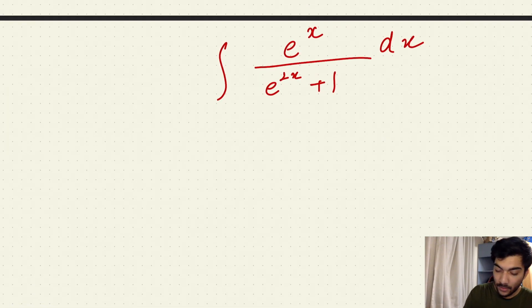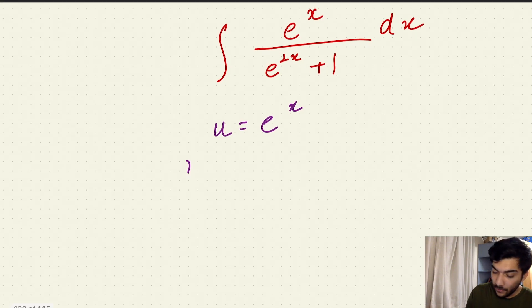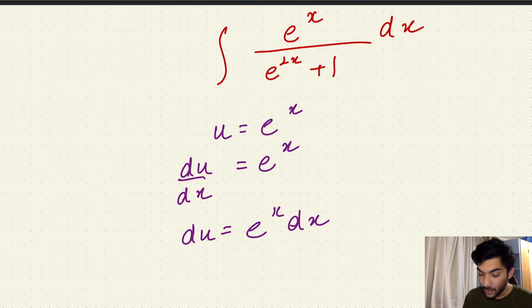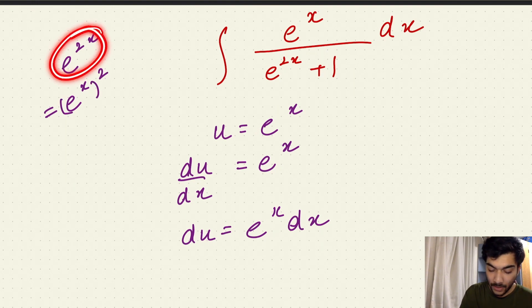Let's try solving it by assuming our u to be e^x. Now if we take the derivative of our u with respect to x, we would get e^x. And now we have e^x dx, which can be substituted to du. We have to substitute every occurrence of e^x to u. And e^(2x) can be simply written as (e^x)^2.